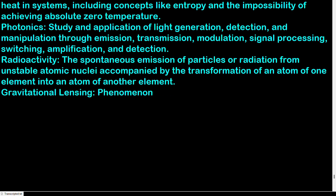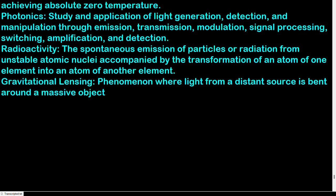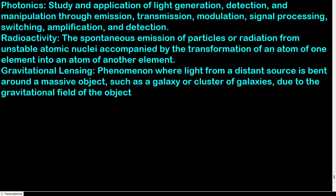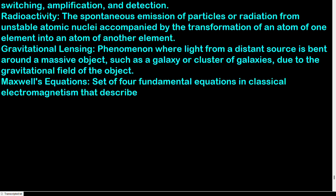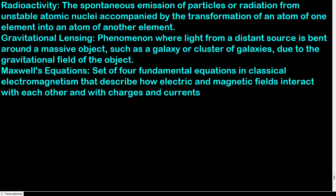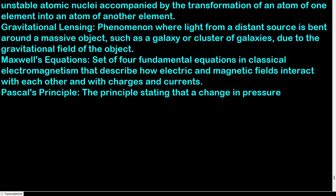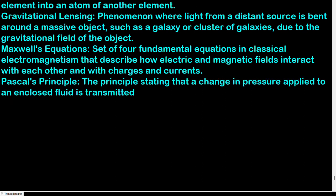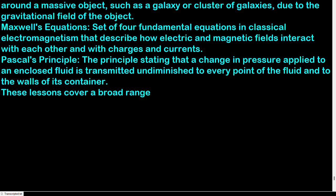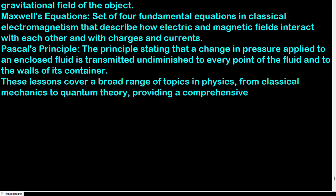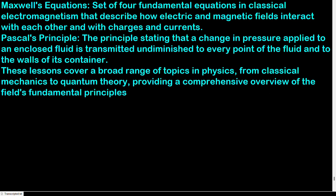Gravitational lensing: phenomenon where light from a distant source is bent around a massive object, such as a galaxy or cluster of galaxies, due to the gravitational field of the object. Maxwell's equations: set of four fundamental equations in classical electromagnetism that describe how electric and magnetic fields interact with each other and with charges and currents. Pascal's principle: the principle stating that a change in pressure applied to an enclosed fluid is transmitted undiminished to every point of the fluid and to the walls of its container. These lessons cover a broad range of topics in physics, from classical mechanics to quantum theory, providing a comprehensive overview of the field's fundamental principles and applications.